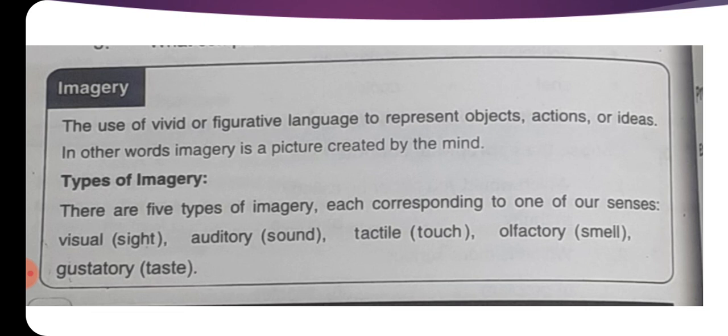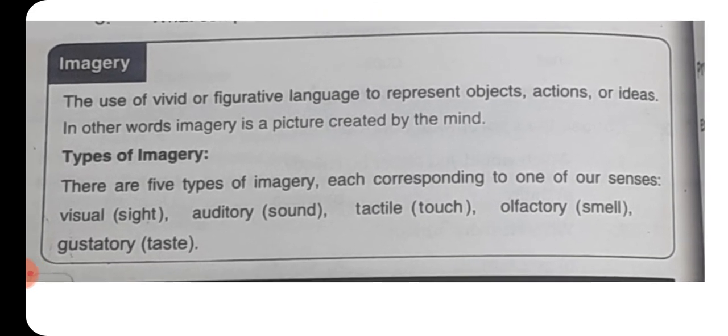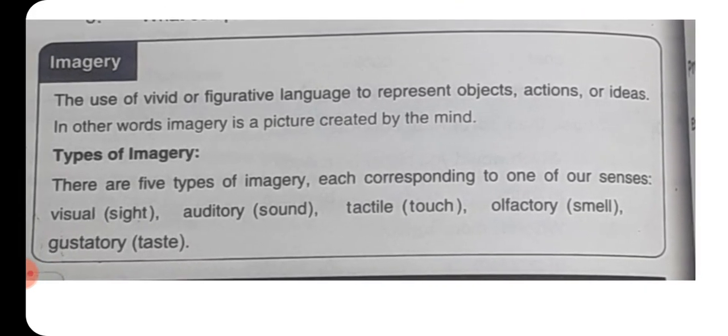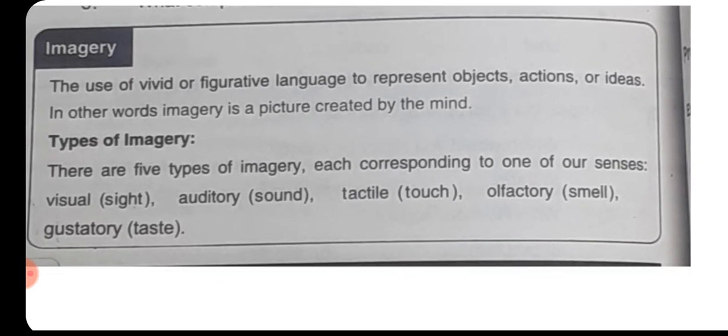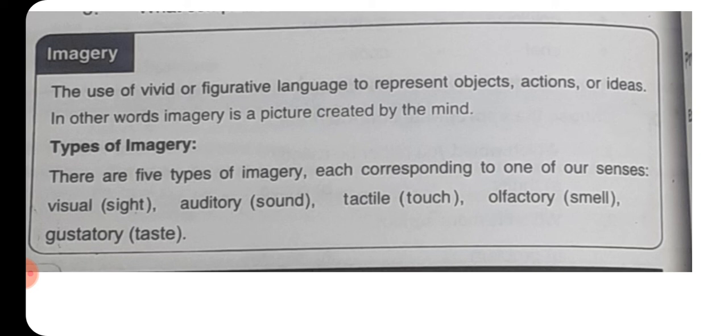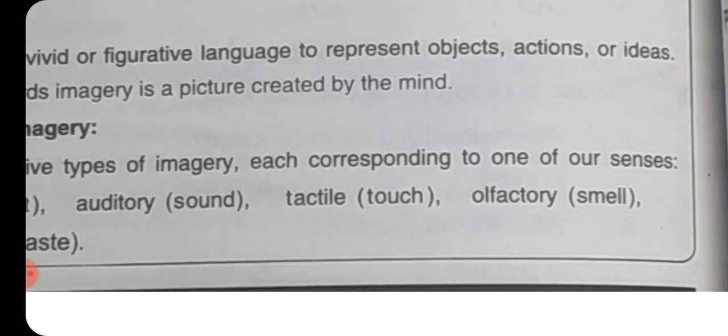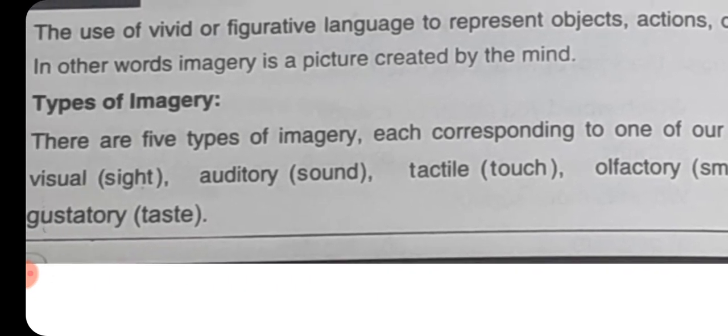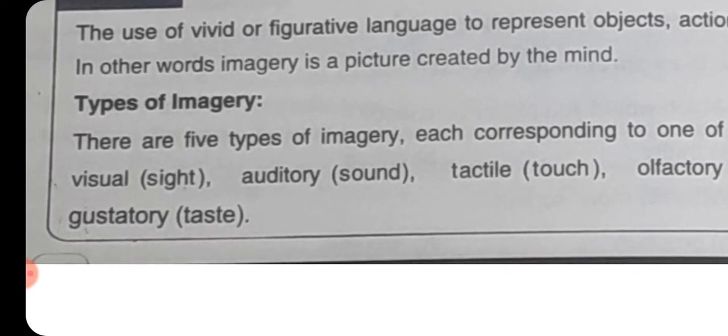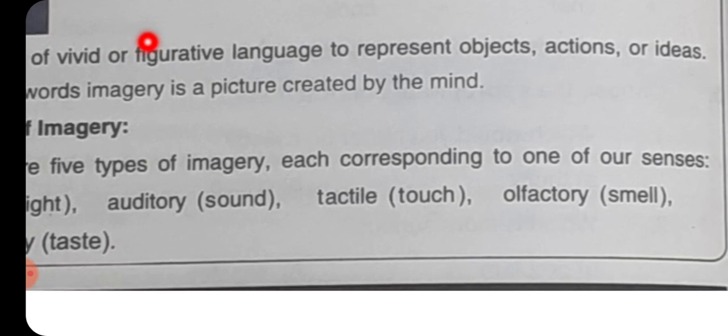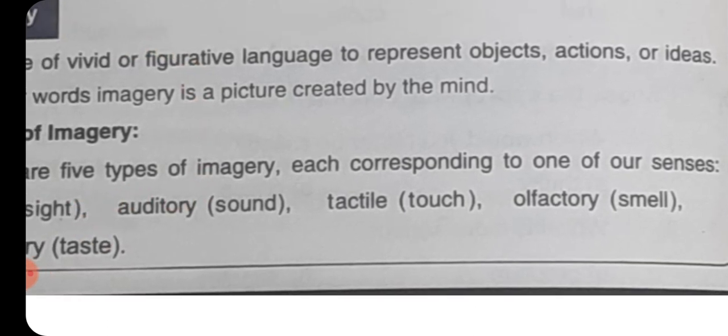انسانوں کی طرح وہ حرکات جو ہیں وہ نہیں کر سکتے لیکن کیوں to beautify his speech, to beautify his poem. Now some types of imagery are given for example visual, auditory, tactile, then we have olfactory and in the end we have gustatory یعنی یہ پانچ طرح کی imagery ہے sight, sound, touch, smell and then we have taste.